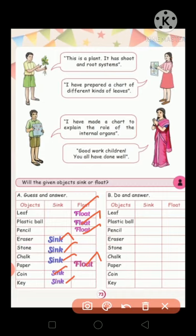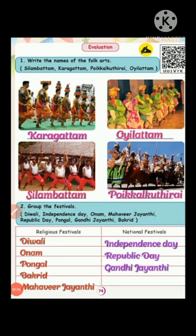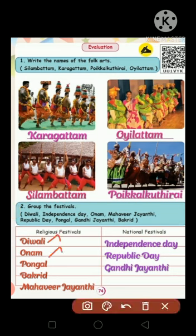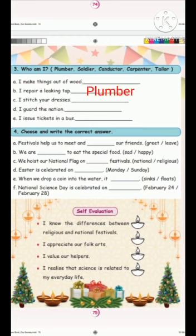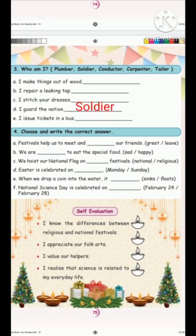Do and answer — Who am I? I make things out of wood — carpenter. I repair a leaking tap — plumber. I stitch your dresses — tailor. I guard the nation — soldier. I issue tickets in a bus — conductor.